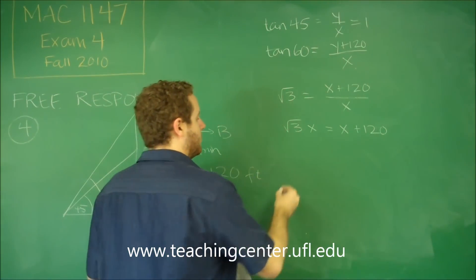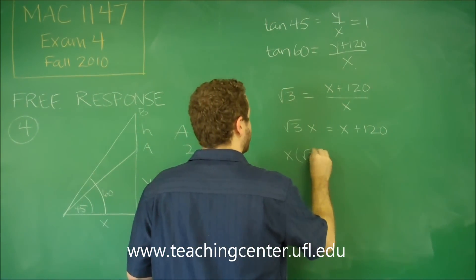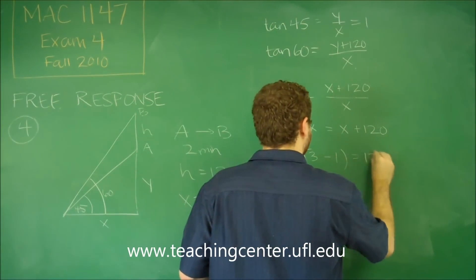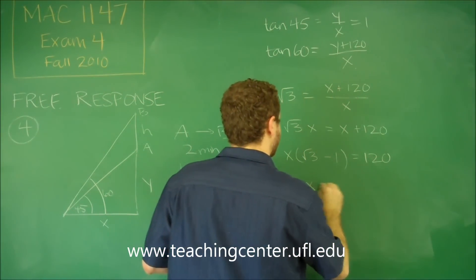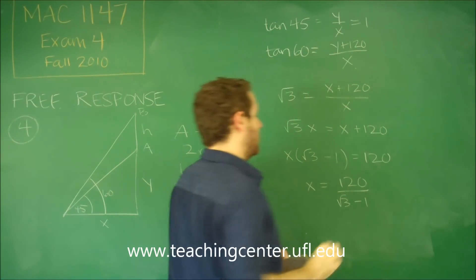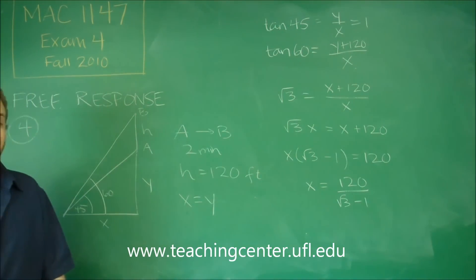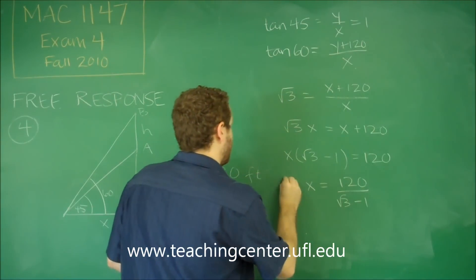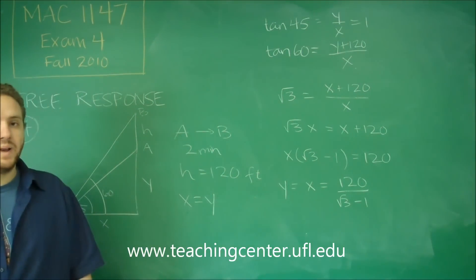We can subtract X over and factor it out. X times root 3 minus 1 equals 120, and finally divide. 120 over root 3 minus 1. That's not rationalized, so you need to. And remember, this is Y also, because Y and X are the same.